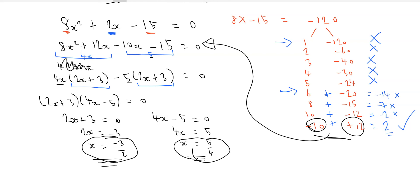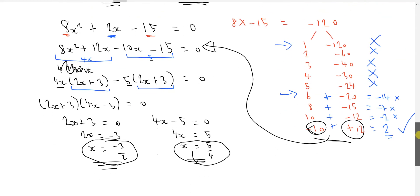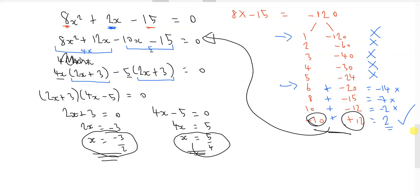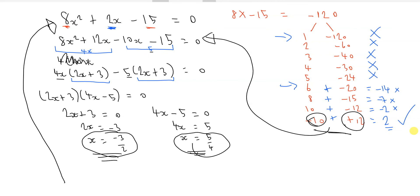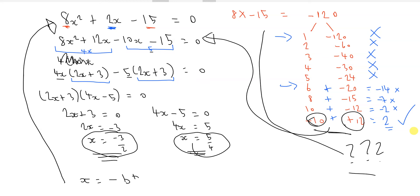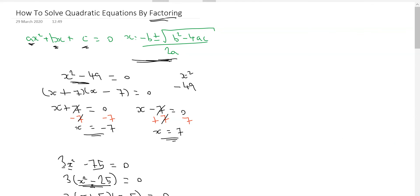Of course, this isn't the only method you can use to factor — there are many different ways. A good alternative if you're ever stuck is the quadratic formula: minus b plus or minus the square root of b squared minus 4ac, all over 2a, and you'd still arrive at the same solutions. I hope you find this method helpful. If you like this video, smash that like button, subscribe and tap that notification bell, and feel free to leave any questions in the comments.